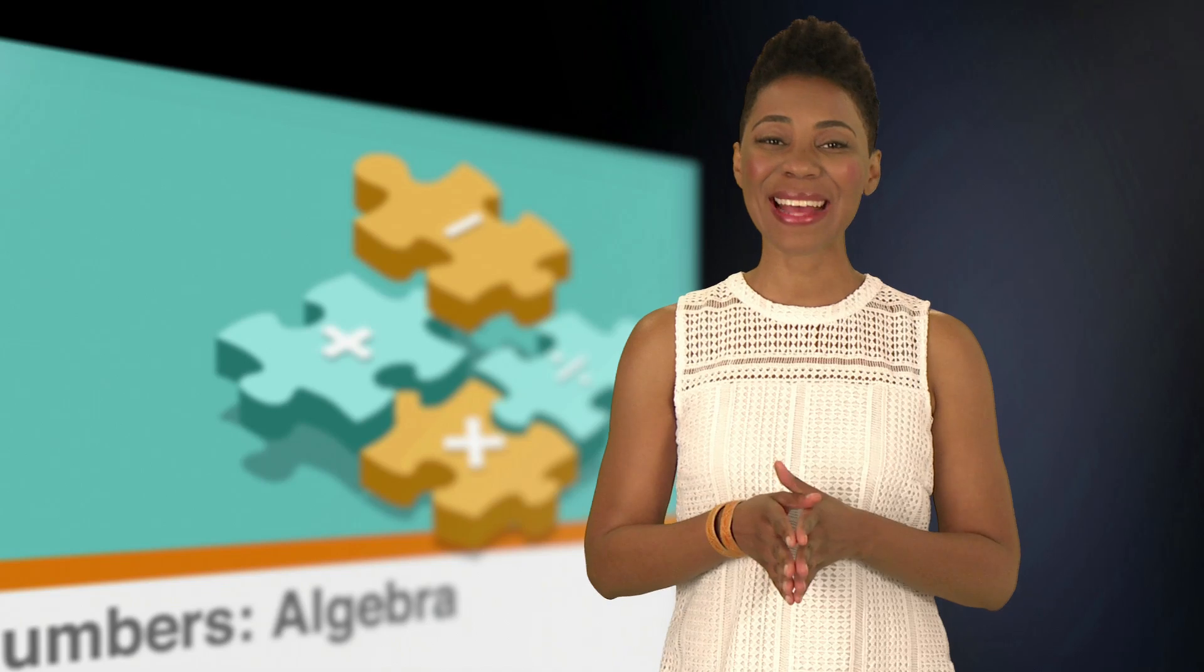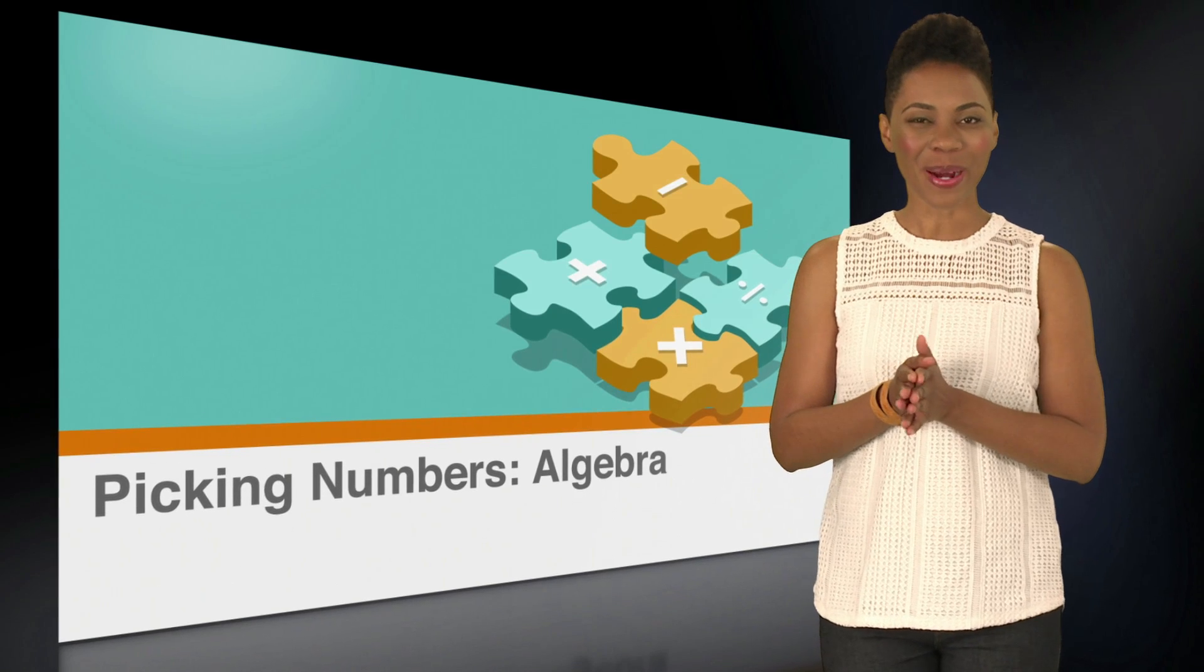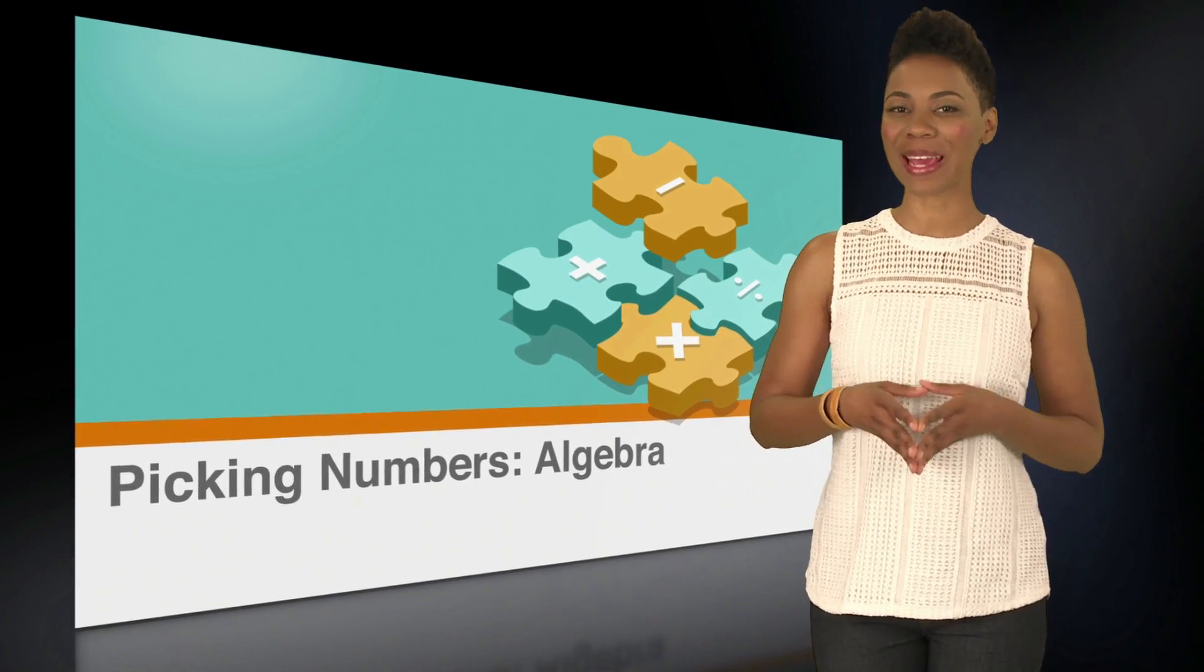We did all of our calculations correctly and got to the right answer. If we hadn't found a number that matched, or if we found two choices that equaled 8 over 15, we would have just picked new numbers and tried again. Remember, the picking numbers strategy will simplify seemingly complicated problems.